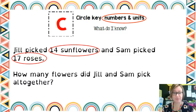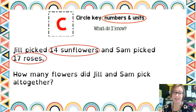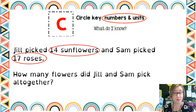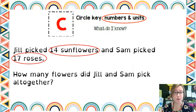The reason we include the sunflowers and the roses is because you'll find later on it says how many flowers did Jill and Sam pick altogether? If for some reason there was a line in this word problem that said they had picked something else that wasn't flowers, then we would know not to include that information. So we circle the key numbers and units: 14 sunflowers and 17 roses.